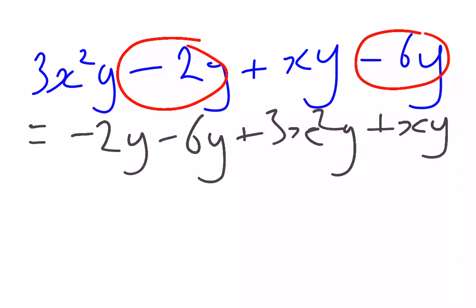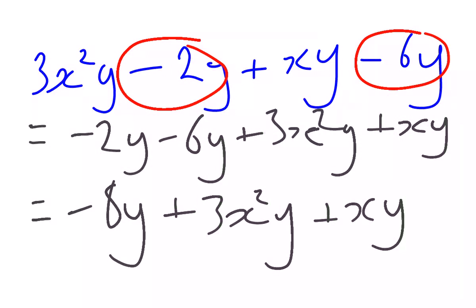The only bit we can deal with to simplify. Negative 2y minus another 6y. I have taken away 2y. I've taken away another 6y. We will get negative 8y. These ones just stay the same. Plus 3x squared y plus xy. We have simplified by adding and subtracting our like terms.